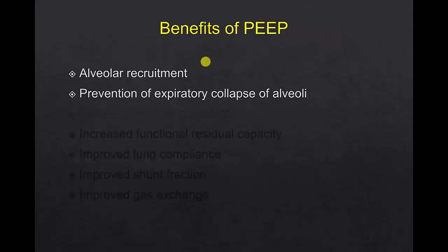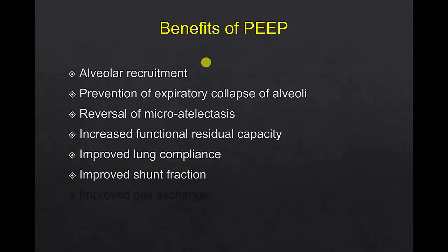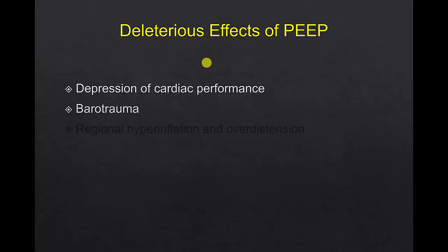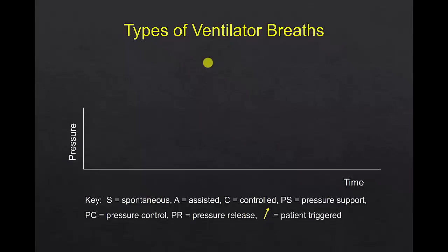Benefits of PEEP include alveolar recruitment, prevention of expiratory collapse of alveoli, reversal of micro-atelectasis, increased functional residual capacity, improved lung compliance by shifting the patient's lung volumes to the more favorable part of the pressure-volume curve, improved shunt fraction, and improved gas exchange. Deleterious effects of PEEP include depression of cardiac performance by a tamponade effect on the pericardium, which decreases left ventricular transmural filling pressure, barotrauma, and regional hyperinflation and over-distension of relatively unaffected areas of the lung.